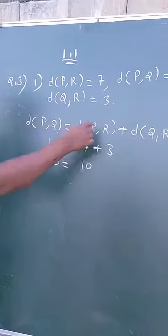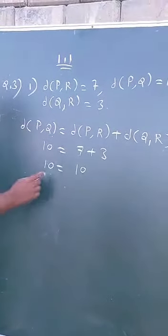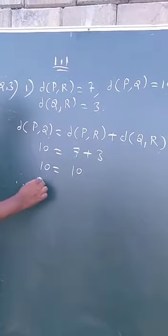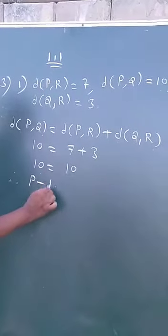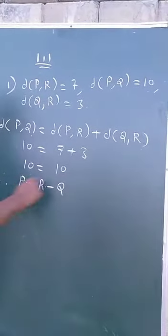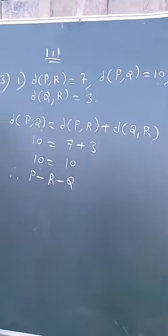Therefore, R is between P and Q. So, P-R-Q, they are collinear points.